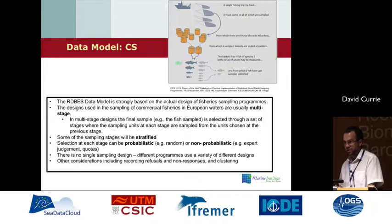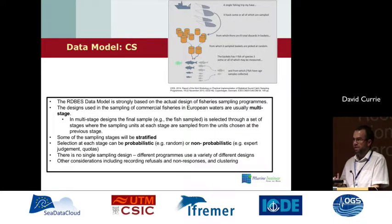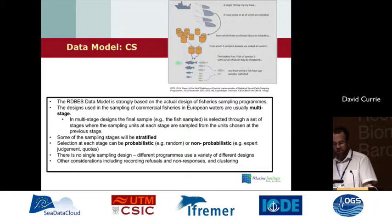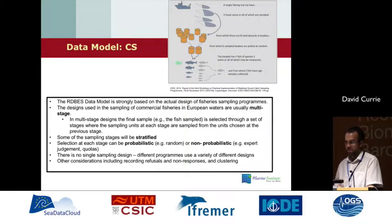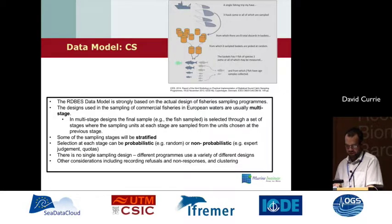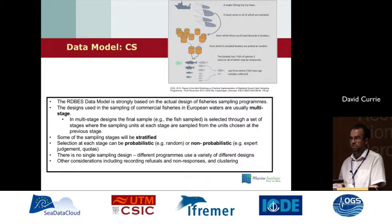The final fish you're measuring is selected through a series of stages. At each point you're sampling a certain number of things from each stage. For example, a fishing trip may have a number of hauls; you sample a number of those hauls; each haul produces a number of baskets of discards; you sample a number of those baskets, and so on down to measuring an actual fish. Typically, sampling stages are stratified, with a mix of probabilistic and non-probabilistic sampling. There's no single sampling design in use, and we also want to record things like refusals, non-responses, and clustering sampling designs.